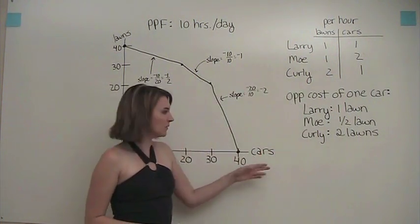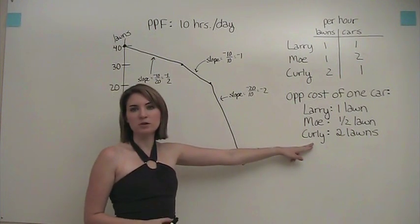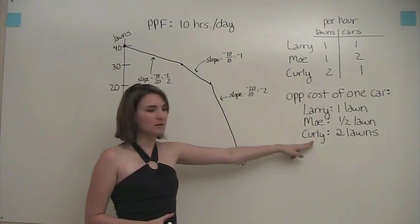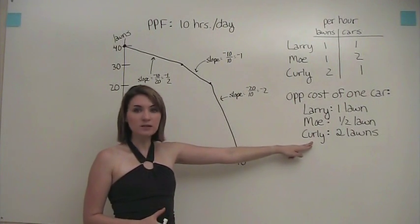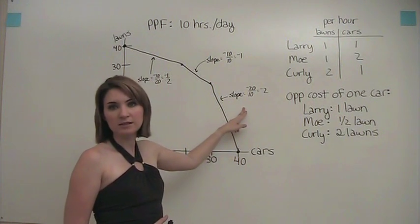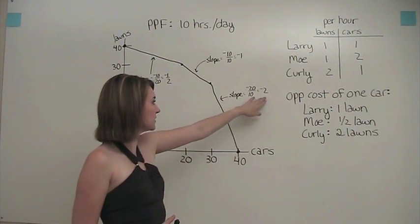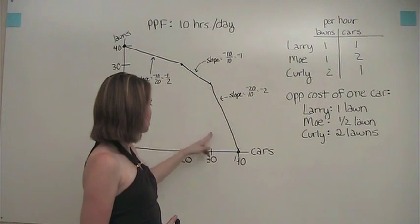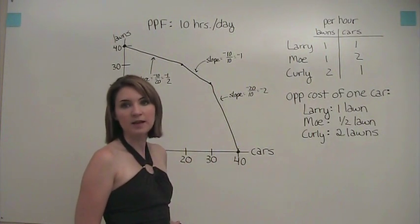The third segment represents the part where we have Curley also switching over to washing cars, in which case his opportunity cost is two lawns. Correspondingly, the slope of this portion of the production possibilities frontier is negative 2, because we have negative 20 divided by 10.